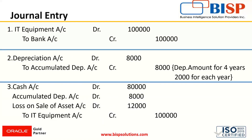For the first transaction, IT equipment has been purchased and the payment was made by check. Since the asset is coming into the business, it has been debited for one lakh dollars, and since payment is made by check, bank will be credited as bank is the giver. Fixed assets are depreciated, so every year depreciation is charged on the asset. For the depreciation journal entry, depreciation account is to be debited and accumulated depreciation account is to be credited. The asset was depreciated for four years at 20%, so one lakh at 20% would be $20,000 — and this is the $80,000 accumulated depreciation for four years.